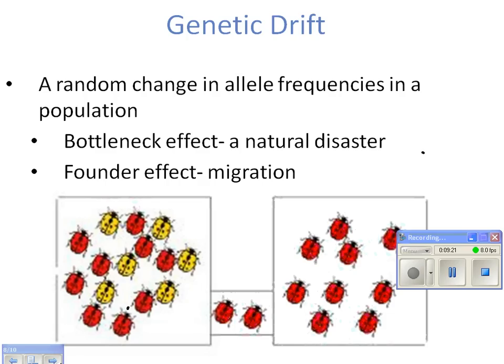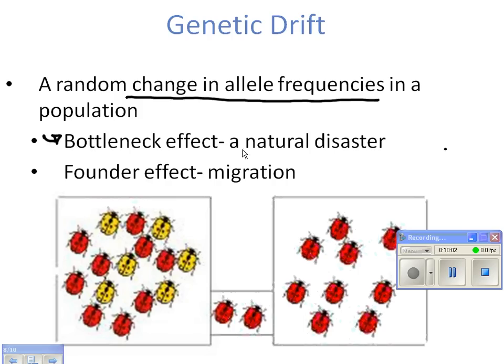Genetic drift and gene flow are two ways evolution can happen that are not natural selection — both are essentially random and deal with changing allele frequencies. Genetic drift occurs when something happens — either the bottleneck effect or the founder effect — where the population changes by chance. The bottleneck effect is typically caused by a natural disaster like a hurricane or earthquake.